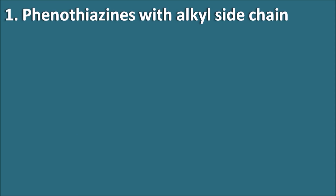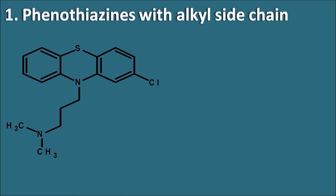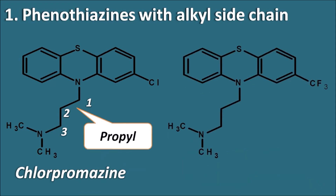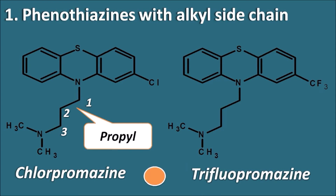The first category is phenothiazines with the alkyl side chain. Chlorpromazine is a simple phenothiazine with an alkyl side chain, having three carbons — that means it is a propyl side chain. Another drug in this category is trifluopromazine. The difference between chlorpromazine and trifluopromazine is that chlorpromazine has the chlorine group at the second position, while trifluopromazine has the trifluoromethyl group; otherwise both structures are almost the same.